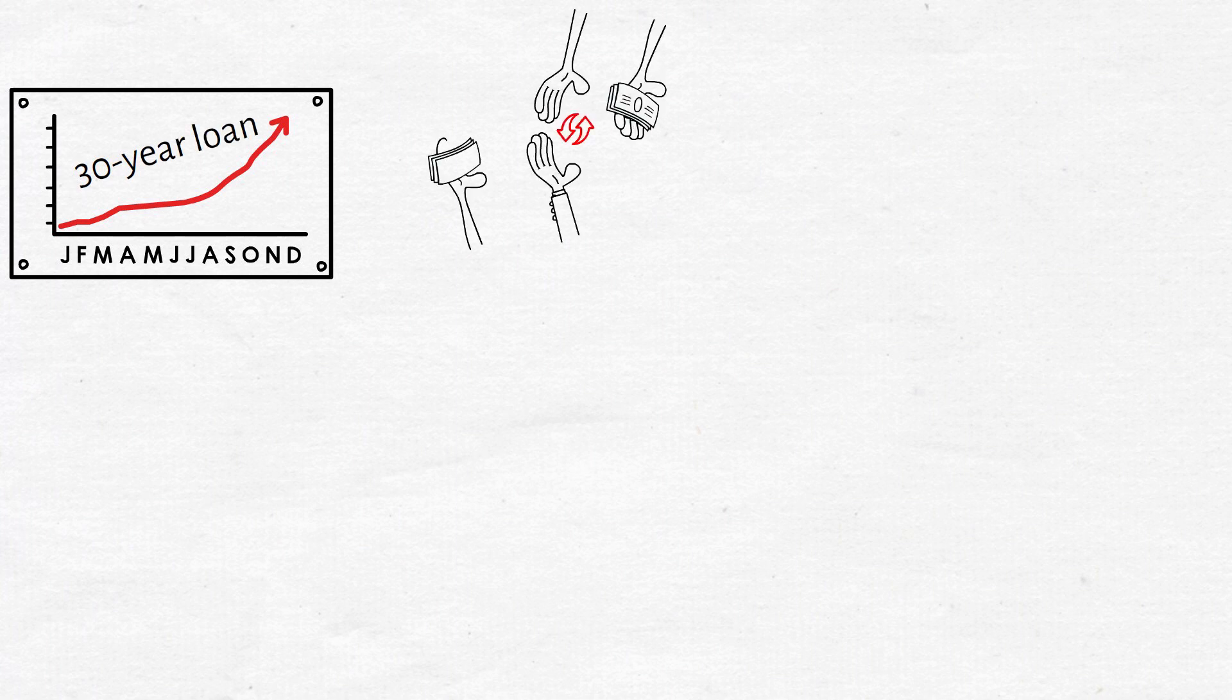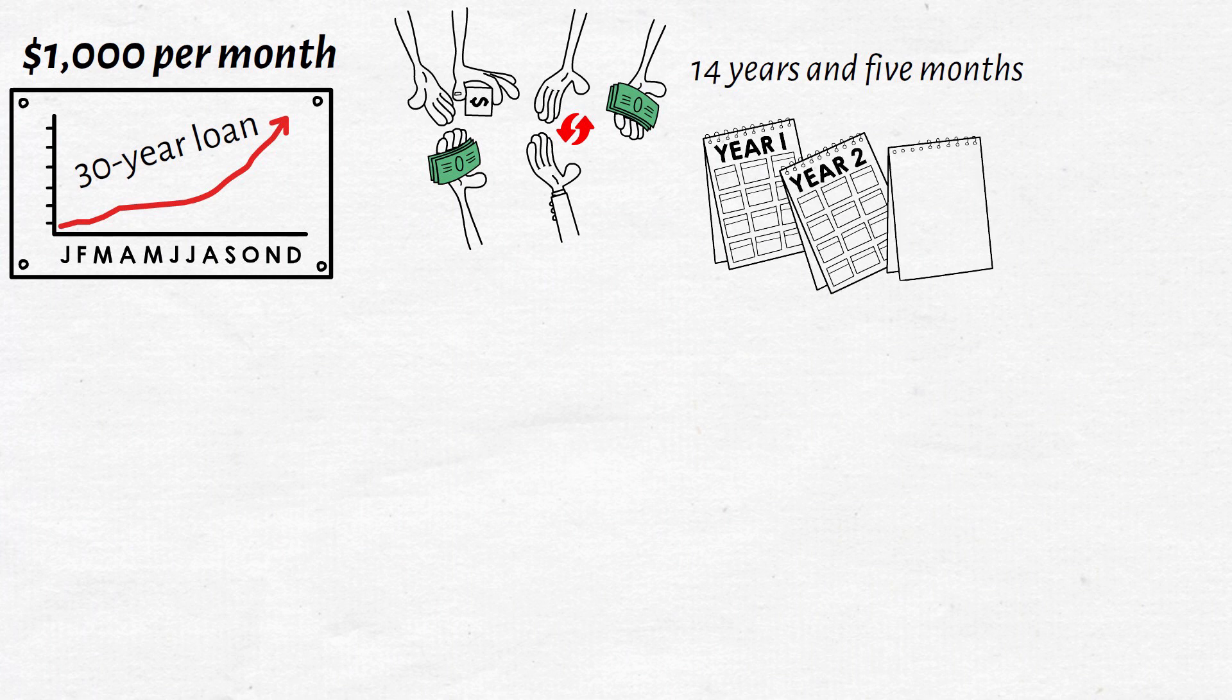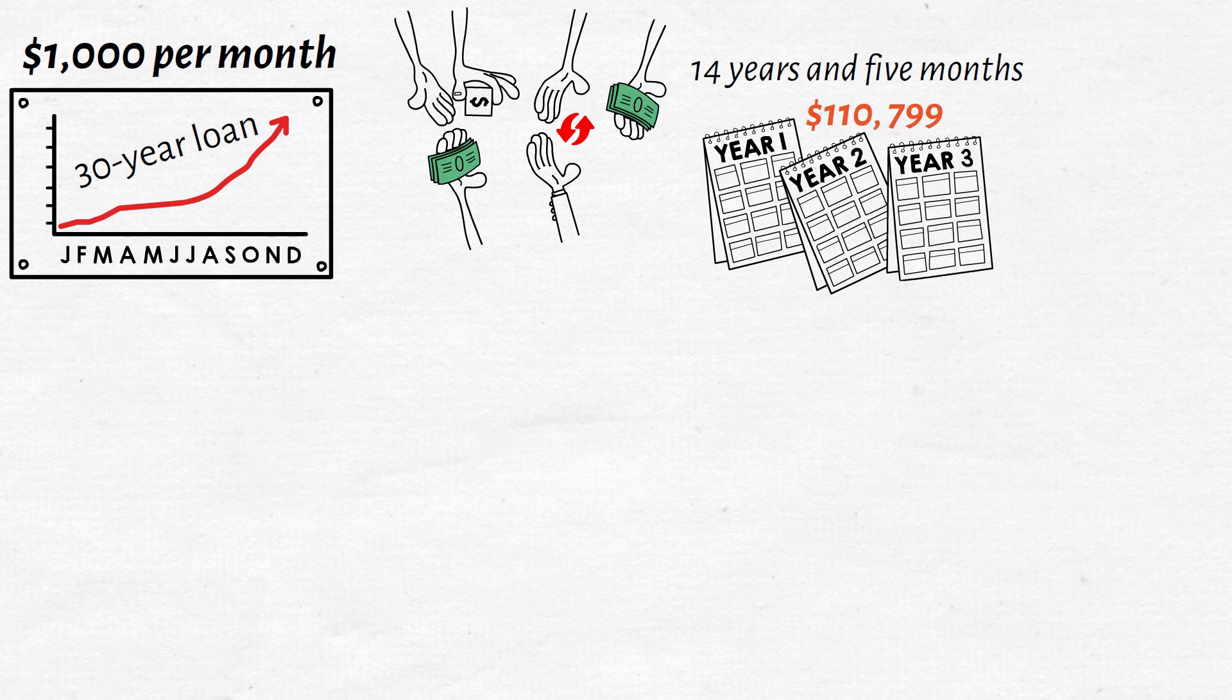Scenario one: paying down the mortgage. Paying an extra $1,000 per month towards principal will have you debt-free in 14 years and 5 months. Instead of having that mortgage linger for 3 decades, this means you only pay $110,799 in interest over the life of the loan.